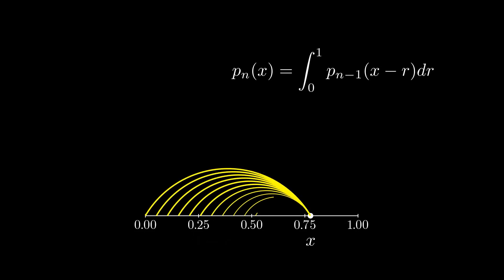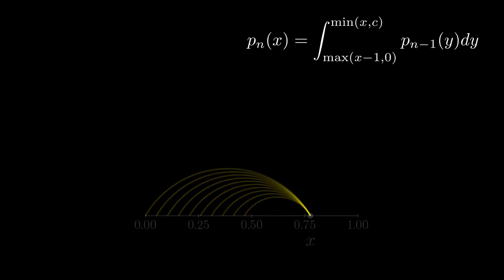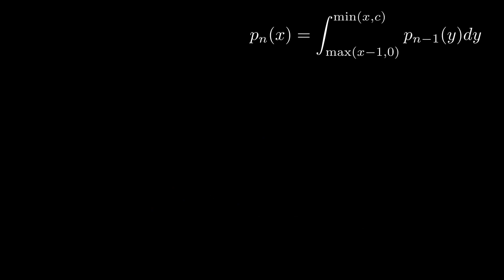If we integrate over all the possible values of r, perform a change of variables, and then account for the fact that we only would have run if we were in the range from zero to c, then we find a formula that allows us to solve for the probability distribution after n runs given the distribution after n minus 1 runs. We can now use this to solve for all n.